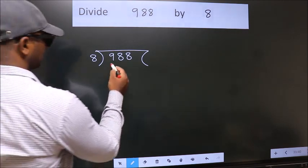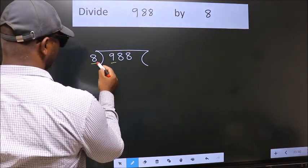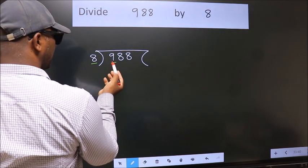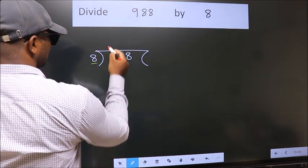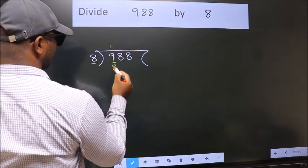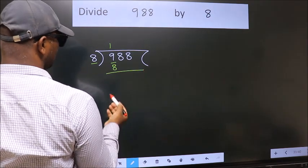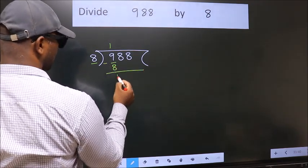here we have 9, here 8. A number close to 9 in 8 table is 8 once, 8. Now we should subtract. We get 1.